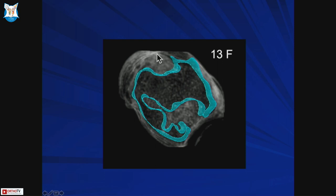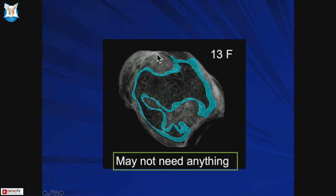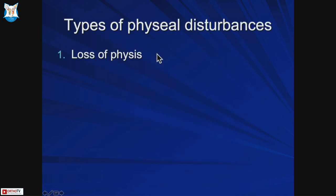If we look at the physeal map, this is how mapping is done: you look at the cross-sectional area of the physis and the area of the bar, then calculate the percentage of physis affected. For a 13-year-old female, it doesn't matter if the bar is 50% or 70% - as long as there is no growth remaining, there will be no deformity, so it may not need anything.